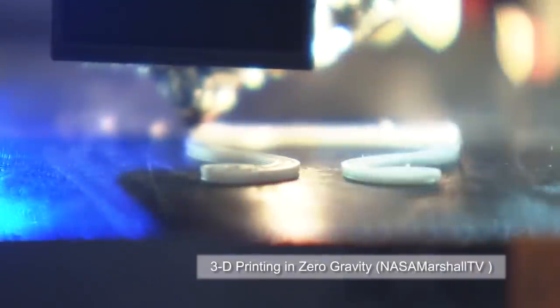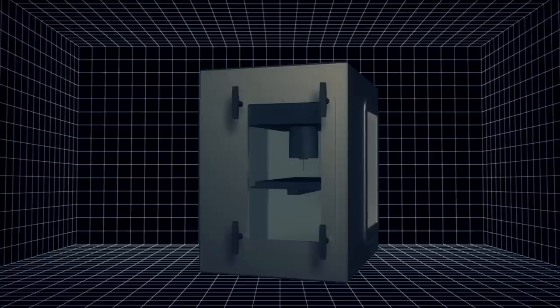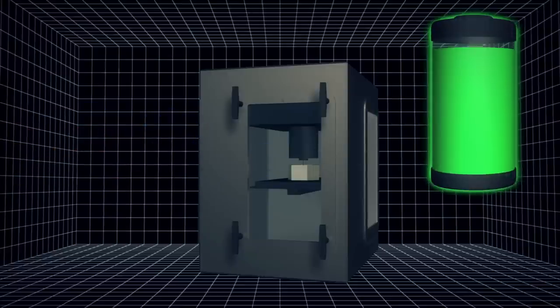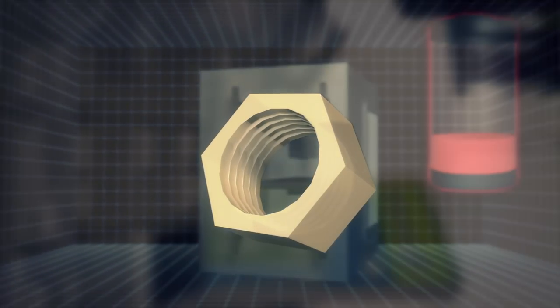3D printers build objects layer by layer through the application of melted polymer and although manufacturing consumes a lot of power, the astronauts will be less dependent on Earth as they will be able to produce the tools and spare parts they need.